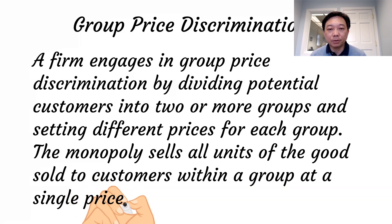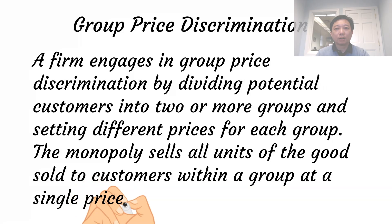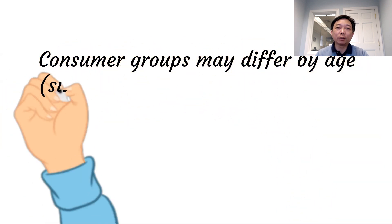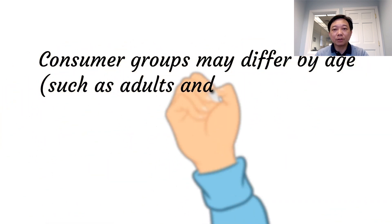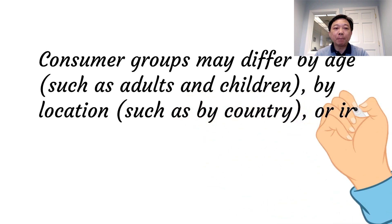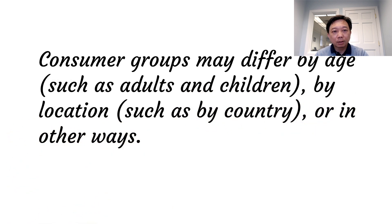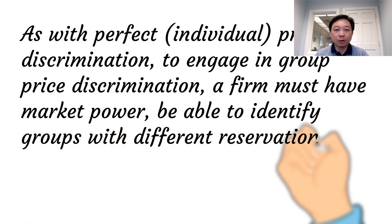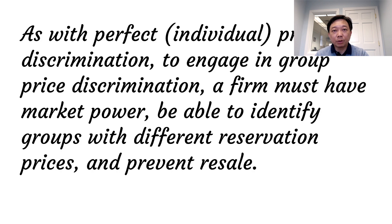As with perfect price discrimination, to engage in group price discrimination a firm must have market power, be able to identify groups with different reservation prices, and prevent resale.